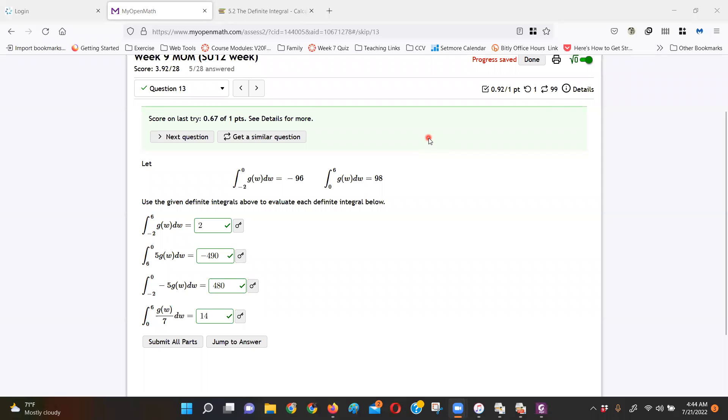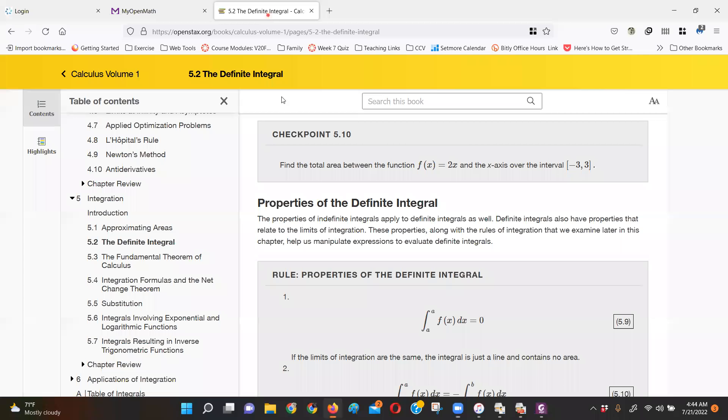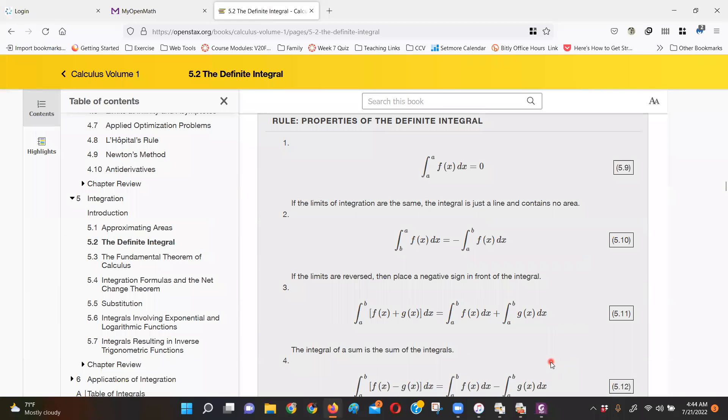So this question is asking us to apply the properties of integrals to do some evaluation of the integrals. This is in section 5.2 in the textbook, page 537. It starts at the bottom of 537, page 538, and there's just these different properties.